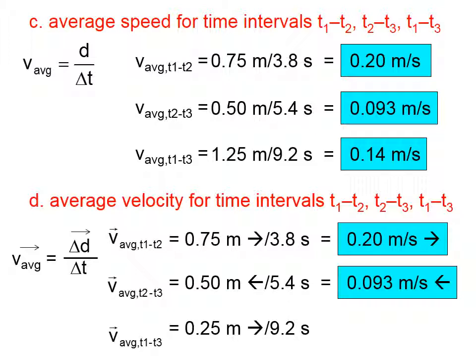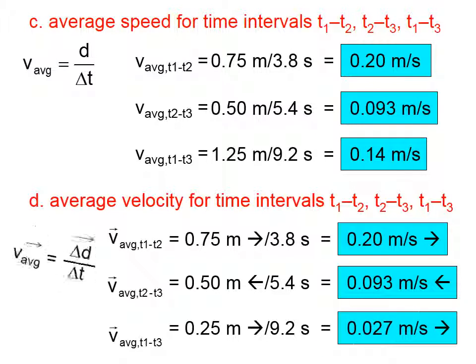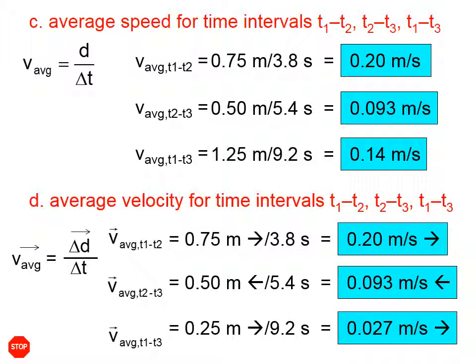Between times 1 and 3, his displacement is only 0.25 meters to the right, and that requires 9.2 seconds to happen. So his average velocity is a very small 0.027 meters per second to the right over those 9.2 seconds.